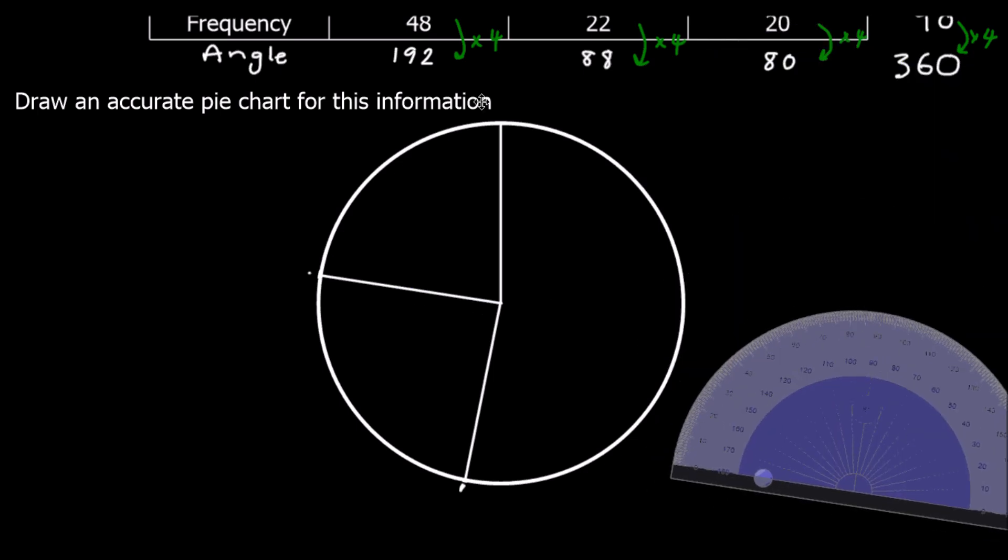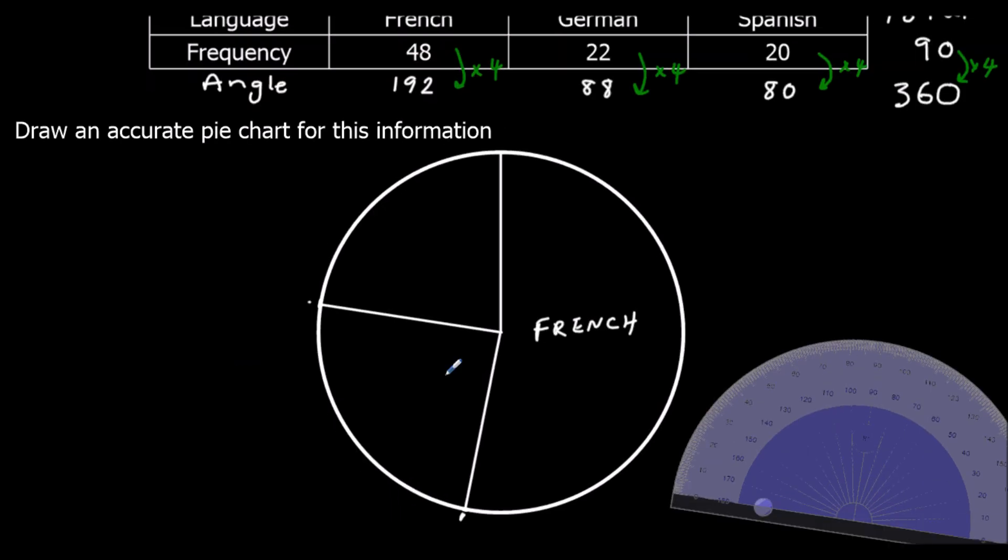So now we just need to label our pie chart. We've got French, which was 192 degrees. Then we had German for 88 degrees, and Spanish for 80 degrees.